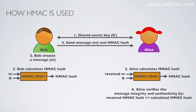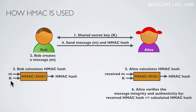Now I will explain how HMAC is used. Step 1: Bob and Alice share a secret key. Step 2: Bob creates a message. Step 3: Bob calculates the HMAC hash. The message and the shared secret key are used as input in the HMAC SHA-1 algorithm, which outputs the HMAC hash.